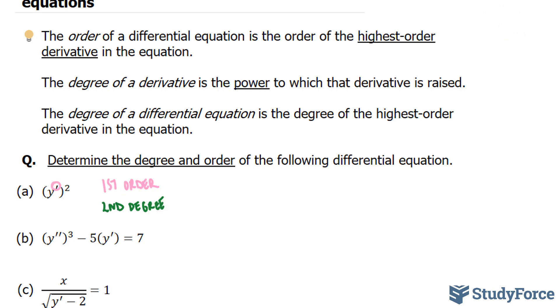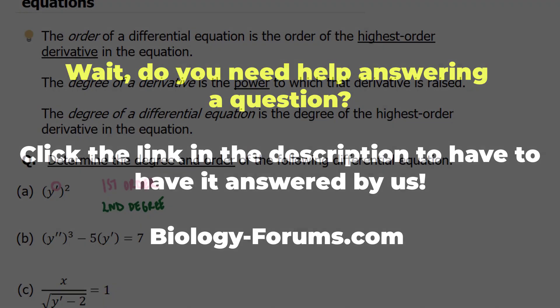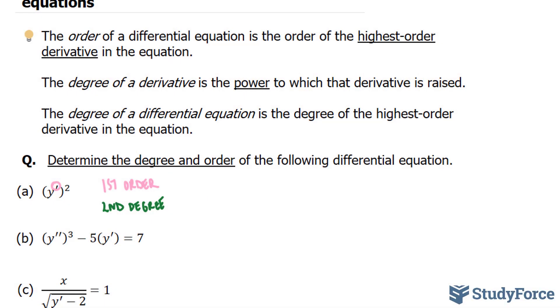In question 2, we have y double prime all raised to the power of 3 minus 5 times y prime is equal to 7. Notice that we have y double prime to the power of 3.